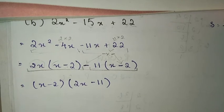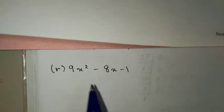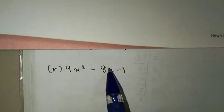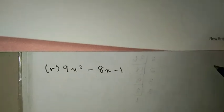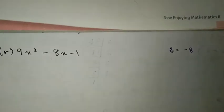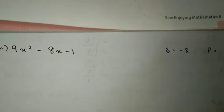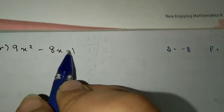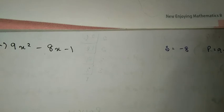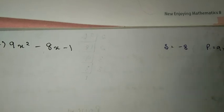Now for sub-number R. Again middle term. The number we multiply gives the product. The sum will be minus 8. Please don't forget the sign. The product will be 9 into minus 1, which equals minus 9.